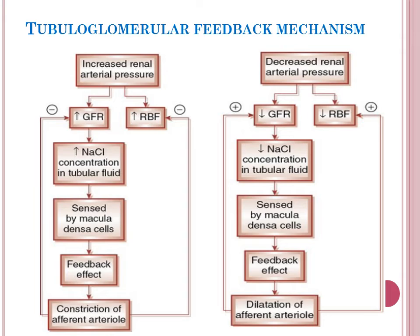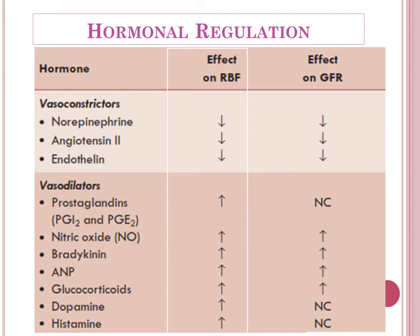The second part of regulation is hormonal regulation. There are two types: vasoconstrictors and vasodilators. Most vasoconstrictors decrease renal blood flow and GFR. Important vasoconstrictors include norepinephrine, angiotensin 2, and endothelin, which constrict the afferent arterioles and decrease renal blood flow. Vasodilators include prostaglandins, nitric oxide, bradykinin, atrial natriuretic peptide, glucocorticoids, and dopamine — all of which increase renal blood flow.